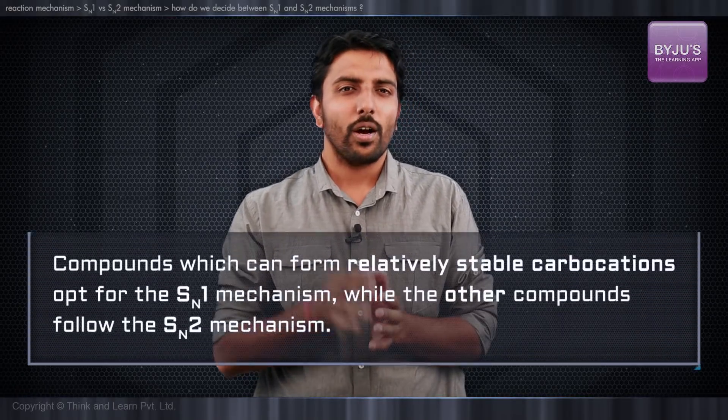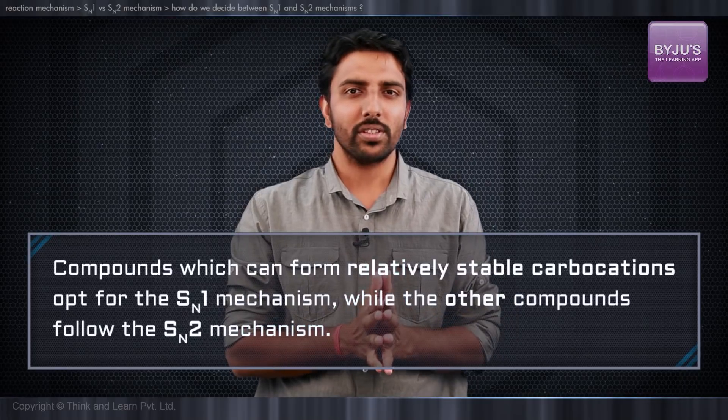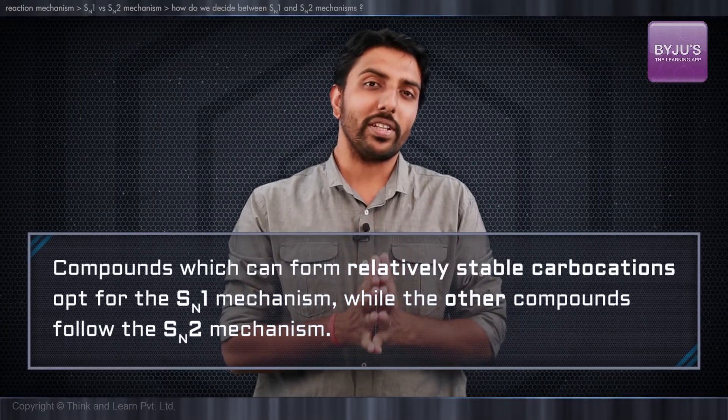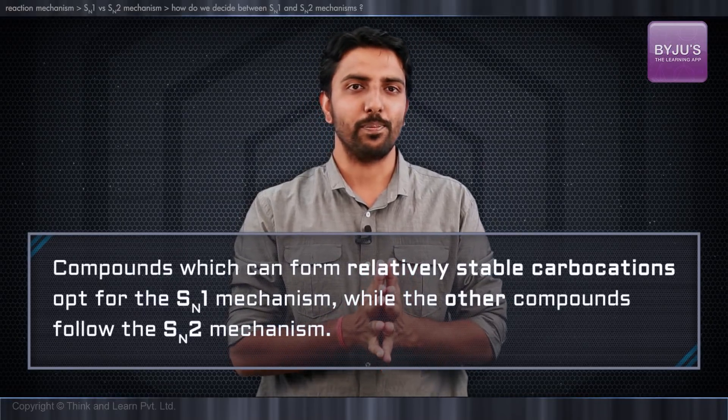We have a very good rule of thumb in that compounds which can form relatively stable carbocations do so and opt for the SN1 pathway, while others have to react via the SN2 mechanism.